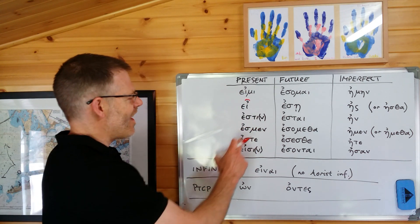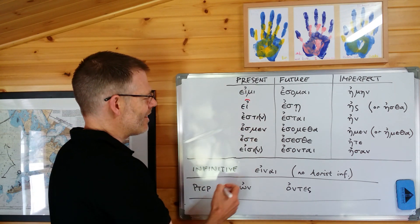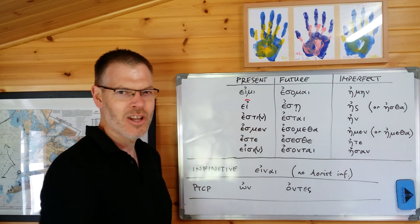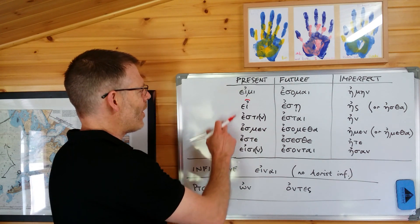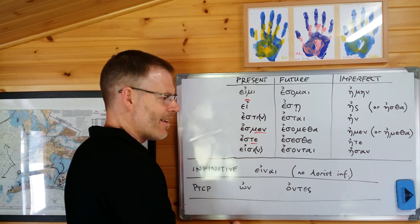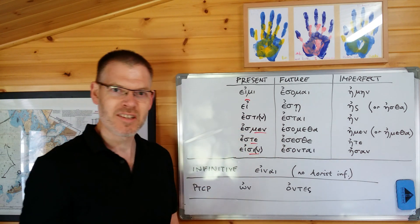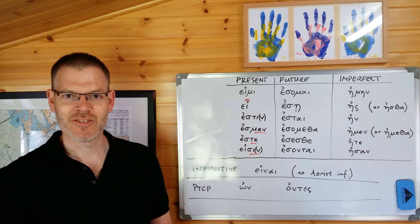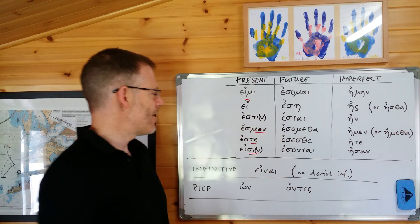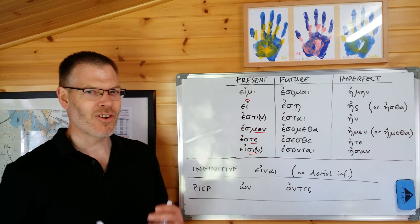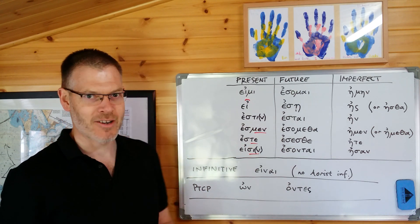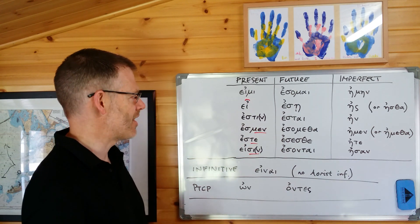You can see here, especially in the plural, some resemblance to λύω, can't you? λύω, λύεις, λύει, λύομεν, λύετε, λύουσιν. You can see some resemblance there. The removable nu in both those cases, as usual. That's not completely unfathomable, given the λύω paradigm that you already know.